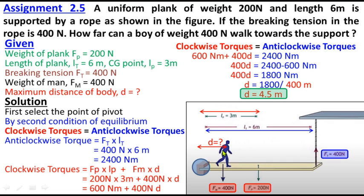The answer is 4.5 meter. The body can walk 4.5 meter from the pivot point, and at this distance equilibrium will be maintained.